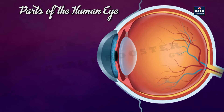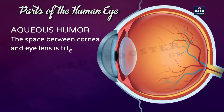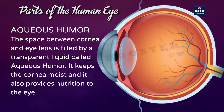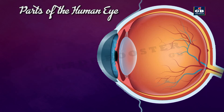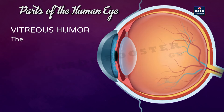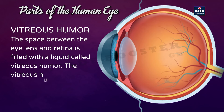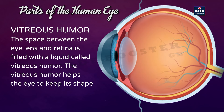Aqueous humor: the space between the cornea and the eye lens is filled by a transparent liquid called aqueous humor. It keeps the cornea moist and provides nutrition to the eye. Vitreous humor: the space between the eye lens and retina is filled with a liquid called vitreous humor, which helps the eye maintain its shape.